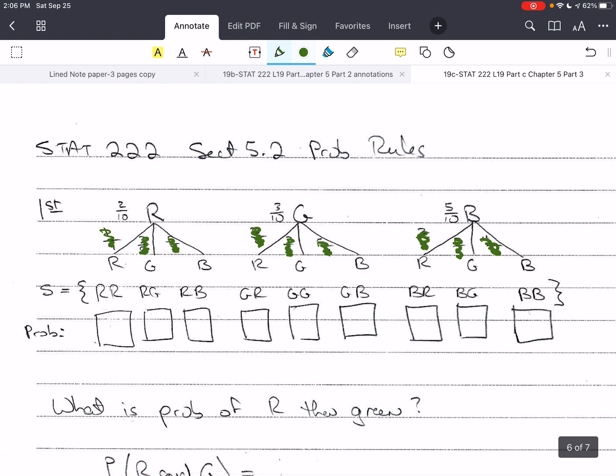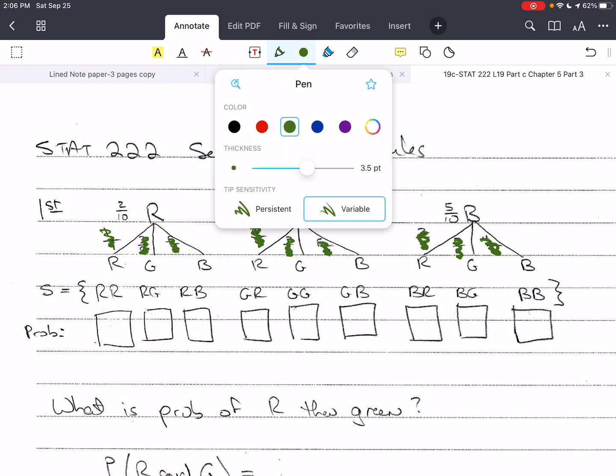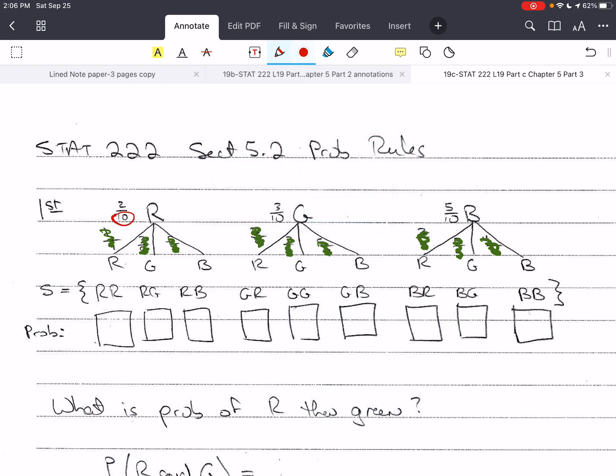For the first marble, we still have 10 total marbles, which is the denominator. Remember, the probability of A is equal to the number of ways A can occur divided by the number of items in our sample space, S. The probability of red was 2 because there were 2 red. There's 2 red, 3 green, and 5 blue marbles. So, there's 10 total.